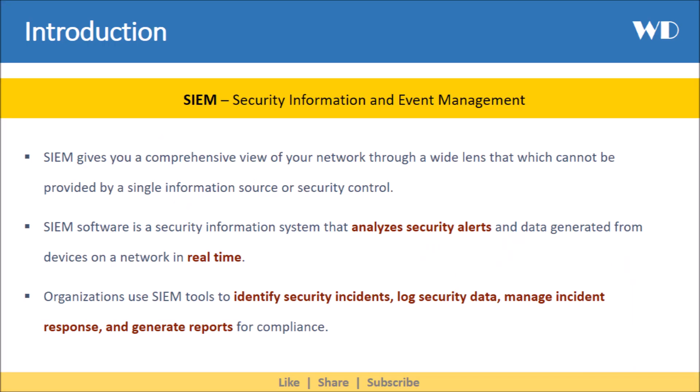SIEM gives you a comprehensive view of your network through a wide lens, which cannot be provided by a single information source or security control. SIEM software is a security information system that analyzes security alerts and data generated from devices on a network in real time. Organizations use SIEM tools to identify security incidents, log security data, manage incident response, and generate reports for compliance.